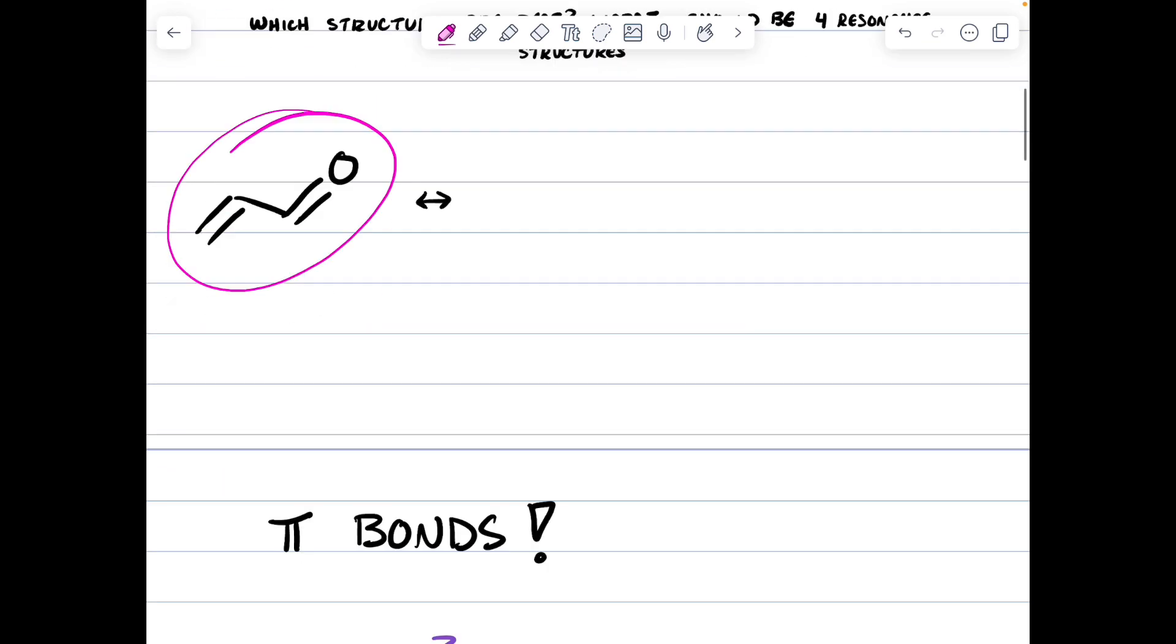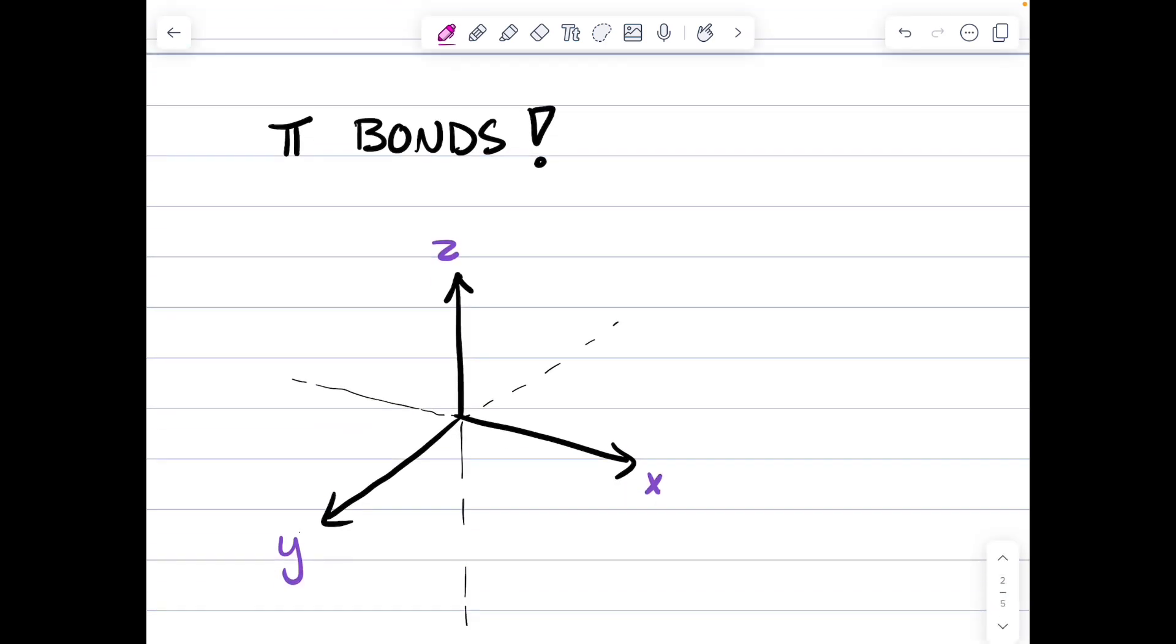Before I can get into resonance, I must talk about pi bonds and the Cartesian plane. This is going to be a very simple explanation and this is just a theoretical situation for me to help you understand what is going on.